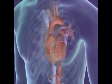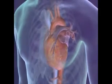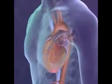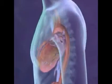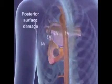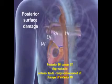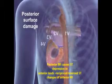Less often the posterior surface is damaged. The changes are seen in the anterior leads V1 to V4, but since those leads face the back of the infarction, the changes will be the reverse of those in an anterior infarction.